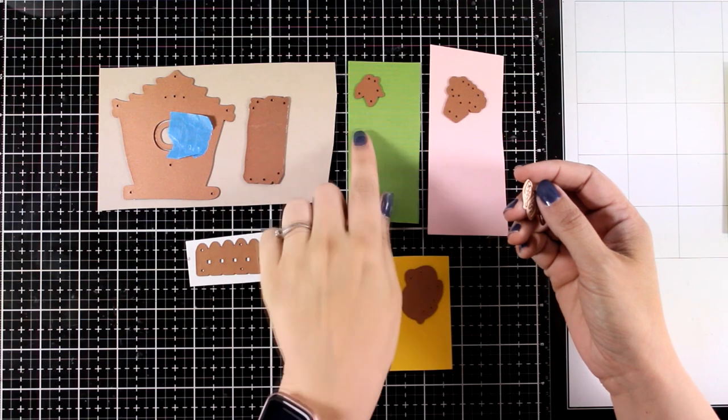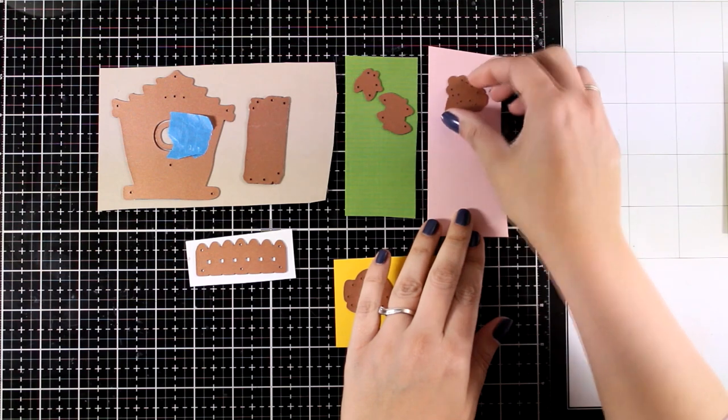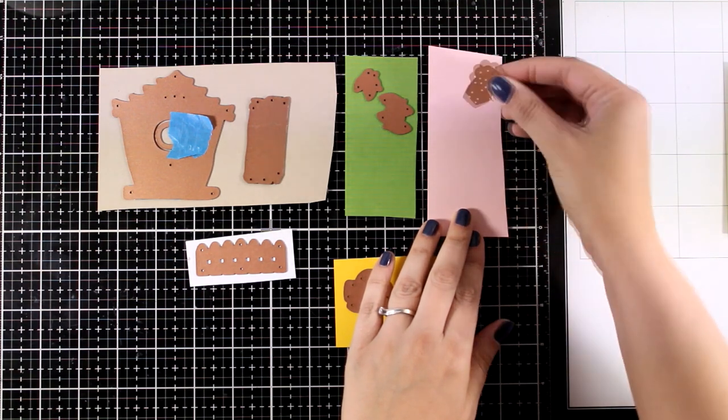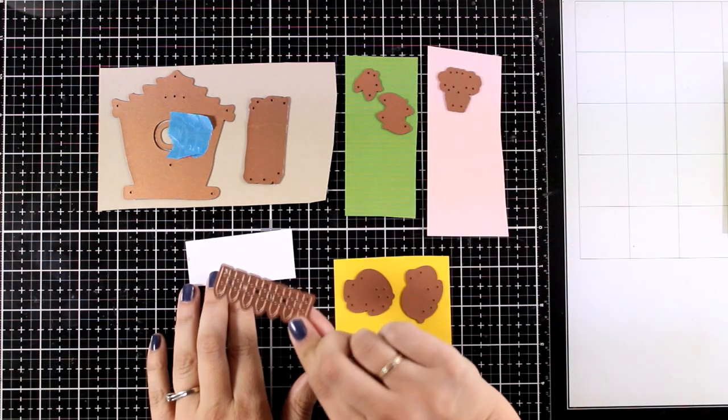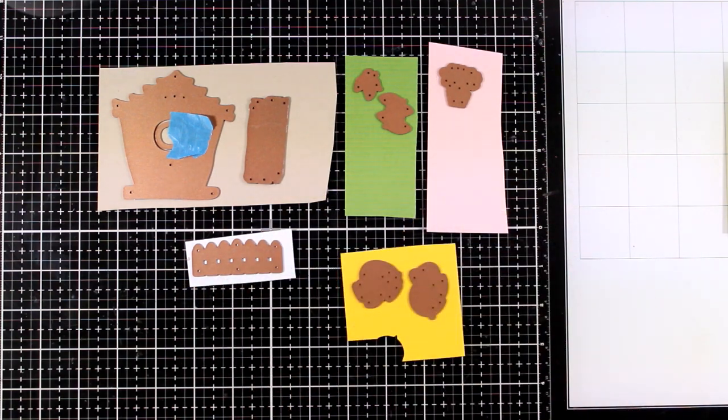I'm also going to use green cardstock for the leaves, and I grabbed extra leaves from the spring set, as well as from the bird set. I'm also going to cut out flowers out of that pink cardstock, a white fence, and yellow birdies.